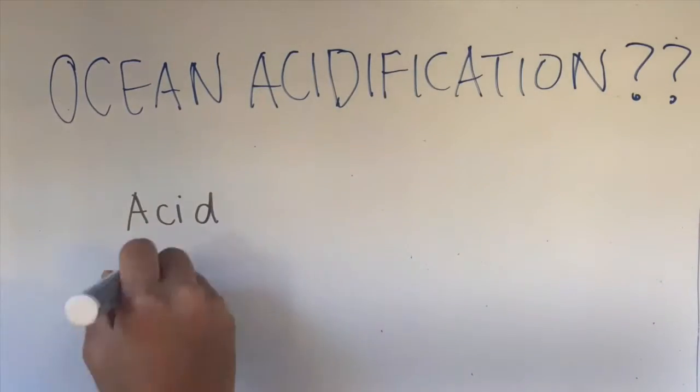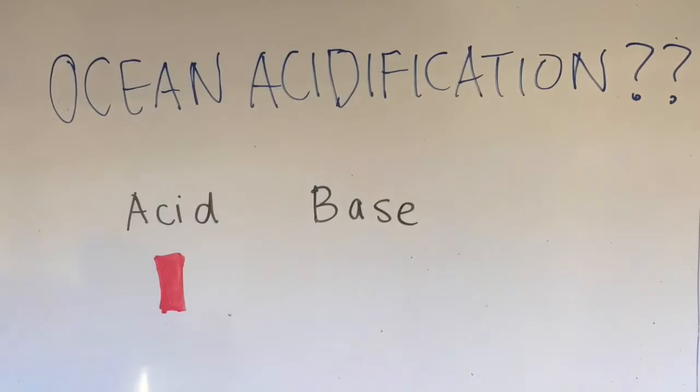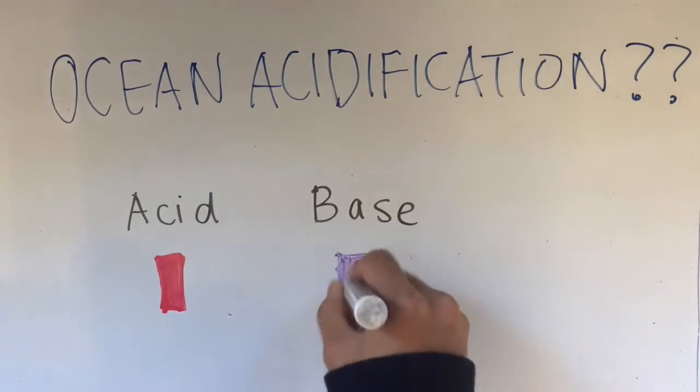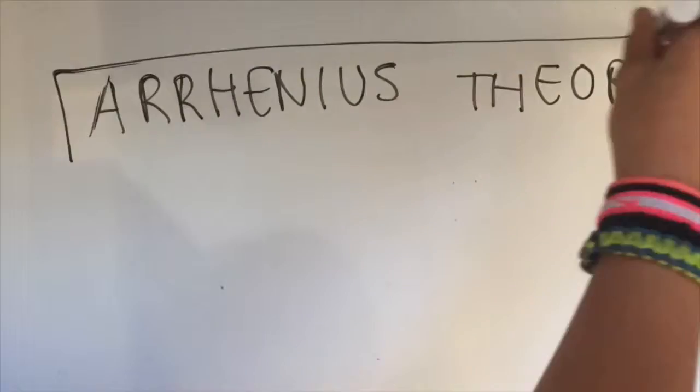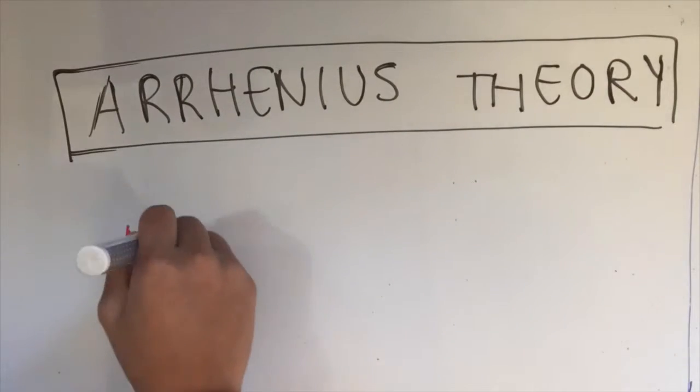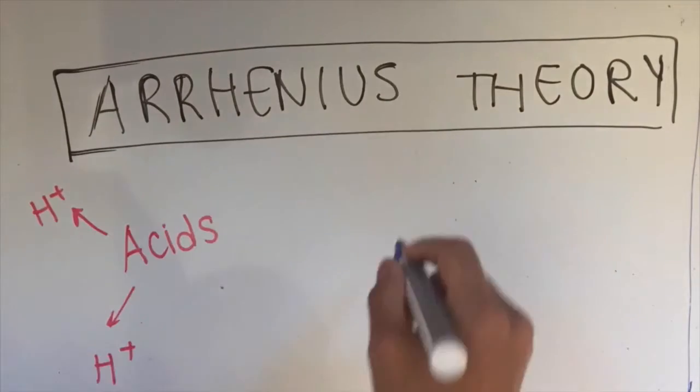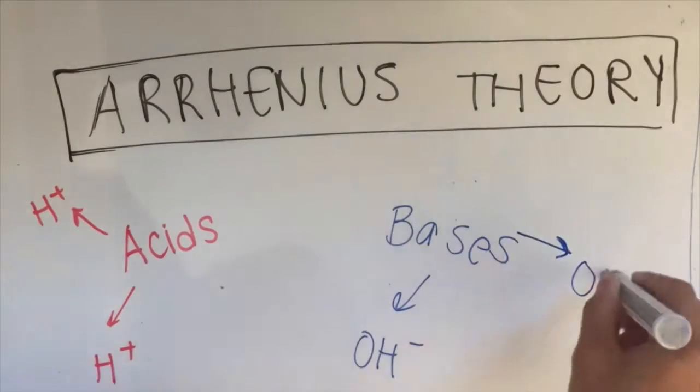Acidification can be classified by how acidic or basic a substance is. For the definition of acids and bases, there are several theories, but the most popular one is the Arrhenius theory. In this theory, an acid is categorized as a substance that produces hydrogen ions in a reaction, and a base is defined as a substance that produces hydroxide.